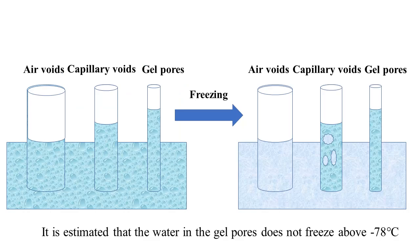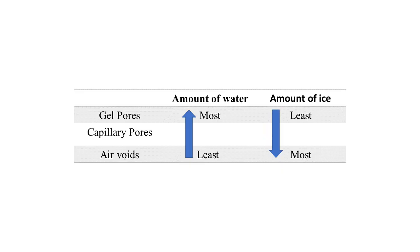Looking at air voids, capillary voids, and gel pores: in capillary voids ice formation is less, and in gel pores it is very difficult to convert water into ice. So the amount of water is more in the gel pores and the amount of ice is least in the gel pores.